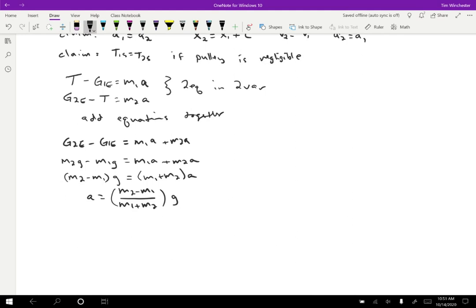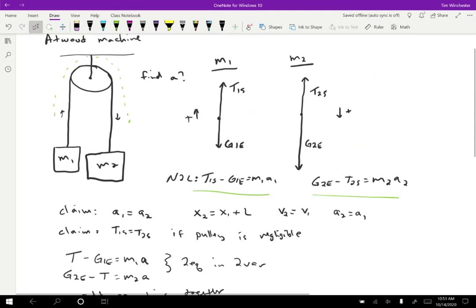Whenever you're solving these problems, you want to keep in mind these two assumptions: that the accelerations will be the same if they're attached by an inextensible string, and the tension does not change when a string goes over a pulley. It's going to be the same tension on each side.